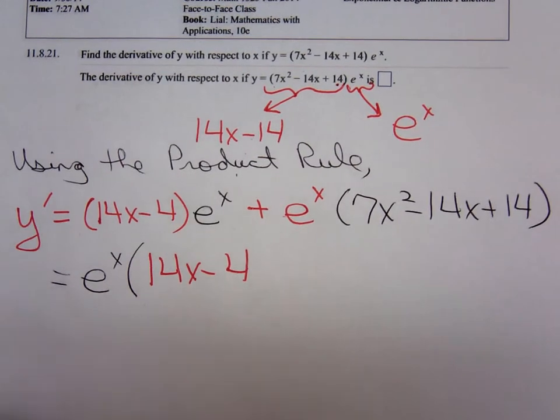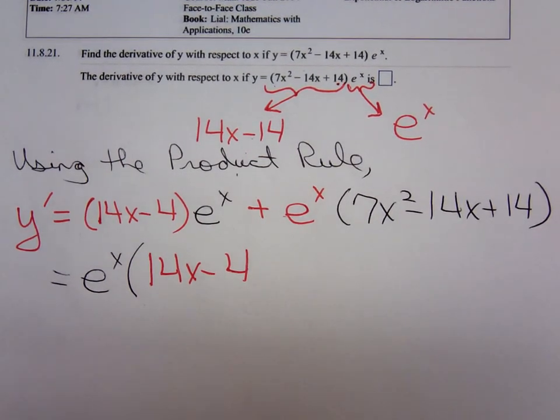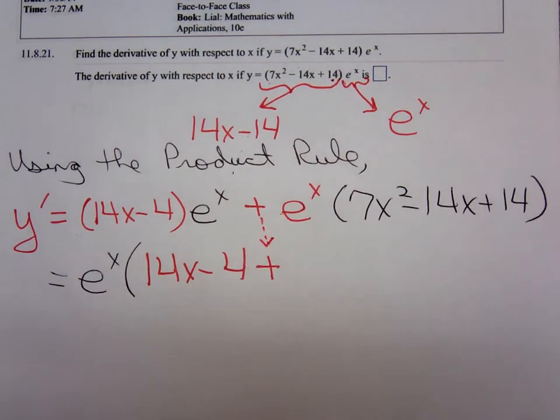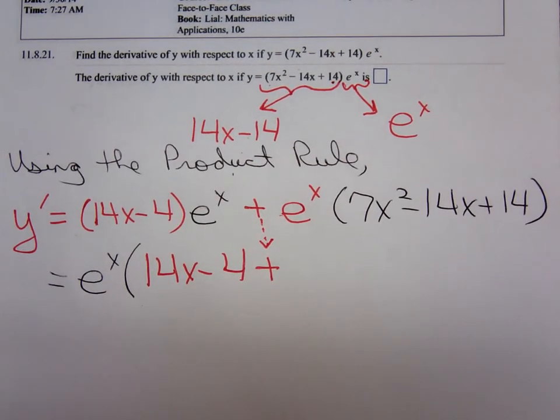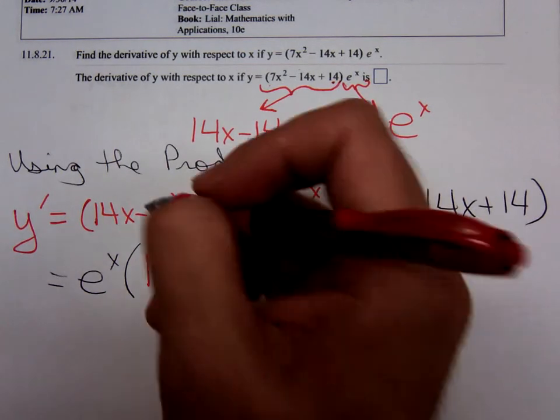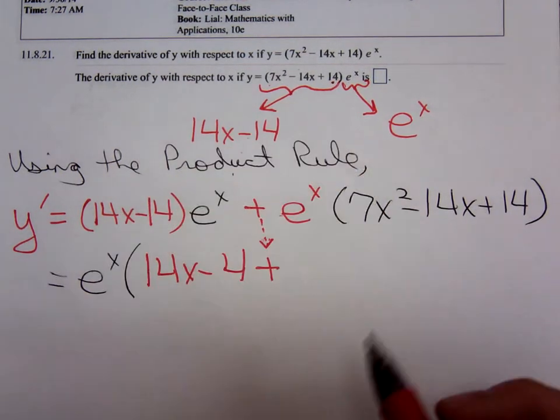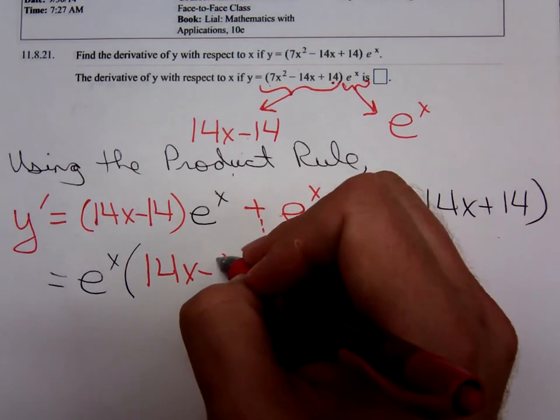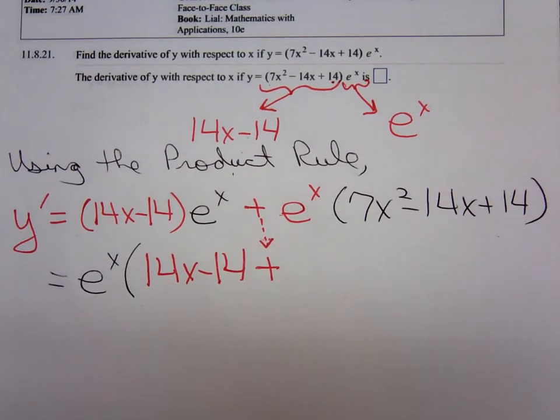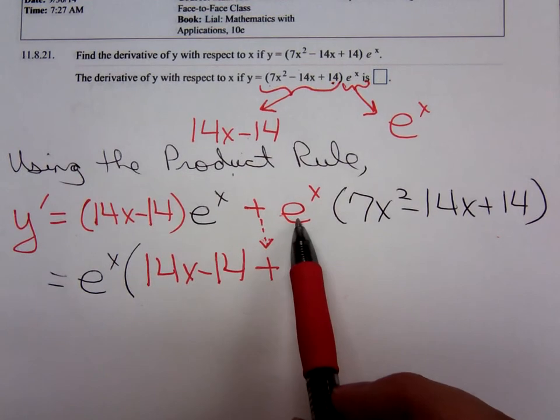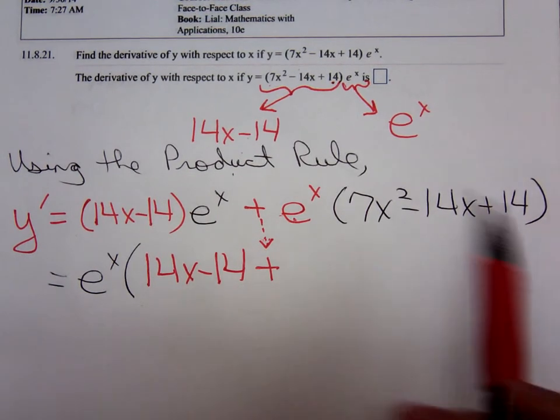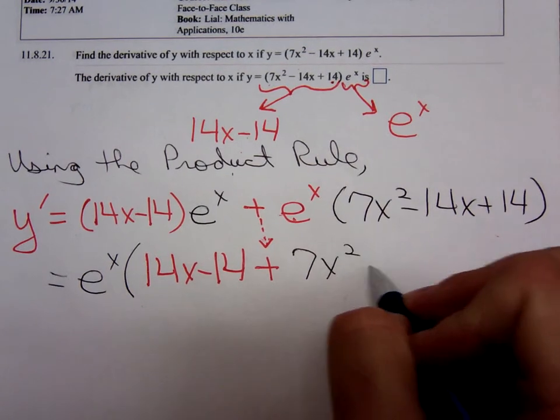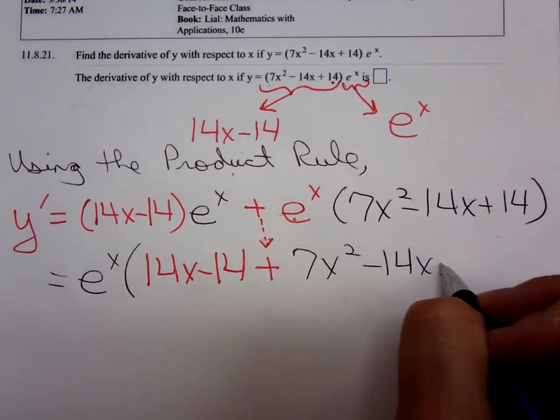This plus that I'm writing is that plus right there. 14x minus 14. We took out the e to the x, so we have left the 7x squared minus 14x plus 14.